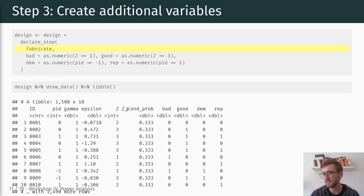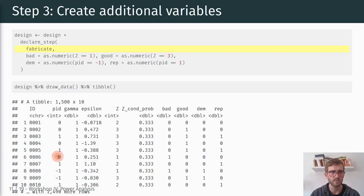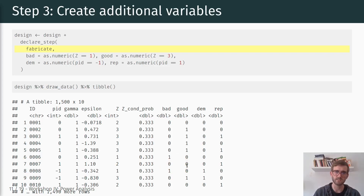We have the same data frame structure — different random draws of course — but the structure is the same. We just have additional variables: bad, good, dem, and republican, for the respective recodings of our treatment assignment and party identification variables. Party identification equal to one is Republican, minus one is Democrat, and zero is the reference category where both dem and rep equal zero. For treatment: one is the negative treatment, three is the positive treatment, and two is control.